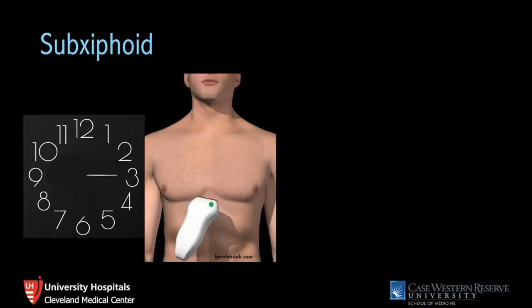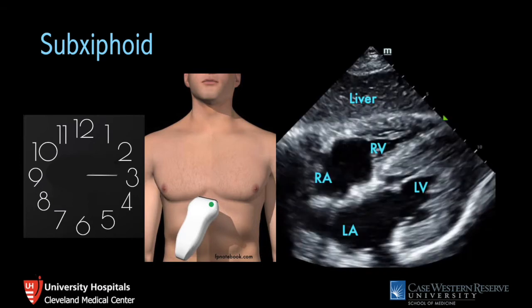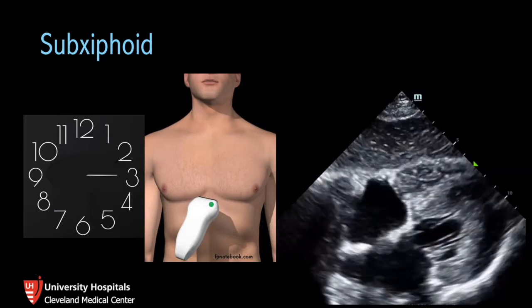Moving into the subxiphoid region, keep your probe marker pointing toward the three o'clock position, with your probe just under the xiphoid process in the epigastrium. It helps to hold your probe with an overhand grasp and apply a lot of pressure — more so than with the other views. You'll actually see the liver in this view since you're in the abdomen looking up at the heart. If you have difficulty getting this view, such as with a lot of bowel gas, slide your probe slightly toward the patient's right — which seems counterintuitive — but use the liver as a good acoustic window, and it generally optimizes your image.